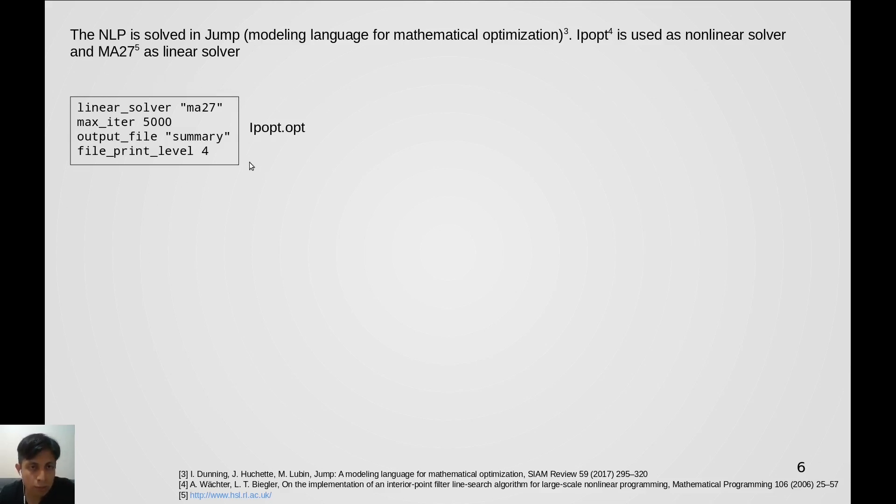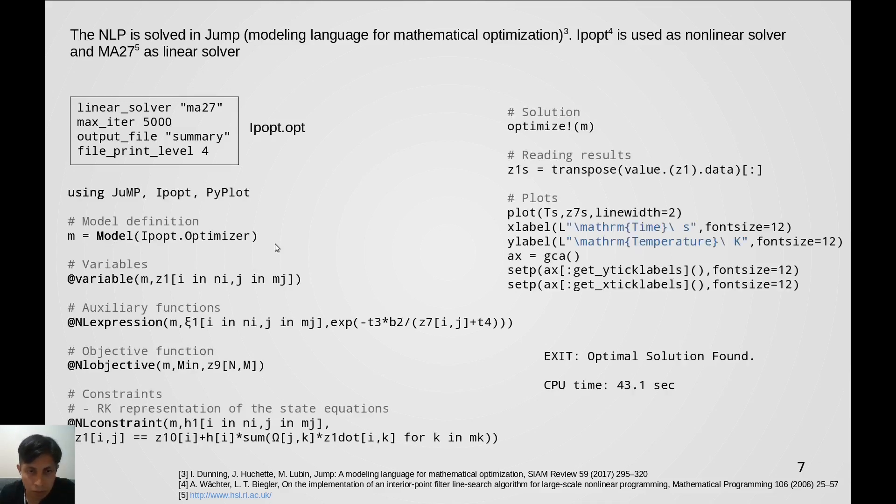First we generate this file which contains the settings for IPopt. Here you can see how we use the different Jump macros to define our model. Here is the output which says that an optimal solution was found in very short CPU time.